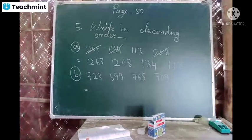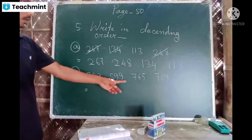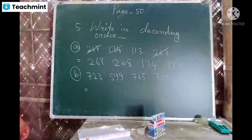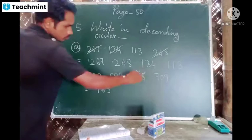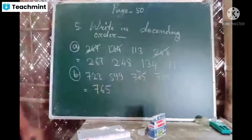765, 723, 599, 765, 710. So 765, 723 - 765 is the big number. Now in these three, this one, this one, and this one - which number is the big number here?